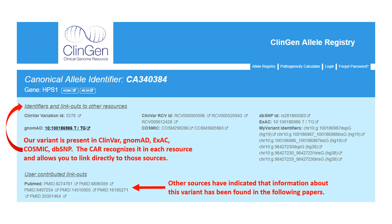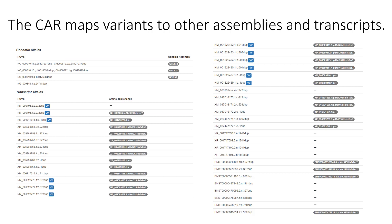If your variant already exists in the Allele Registry, you'll get a result page showing the stable unique identifier at the top — here, CA340384. You can also see that this variant is present in several other resources including ClinVar, gnomAD, ExAC, COSMIC, and dbSNP, with direct links to each for additional information. The registry also shows publications where the variant has been referenced according to third-party sources, which may surface publications not found in your own searches — though remember this is not a comprehensive publication list. Scrolling further down, the registry provides mapping to other assemblies and transcripts for your reference.